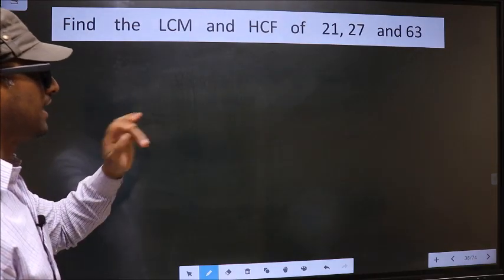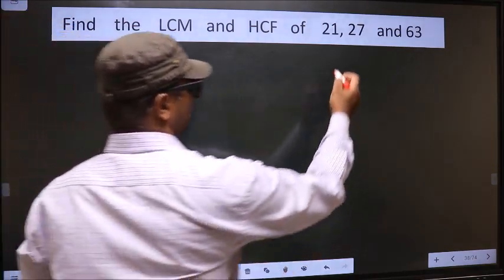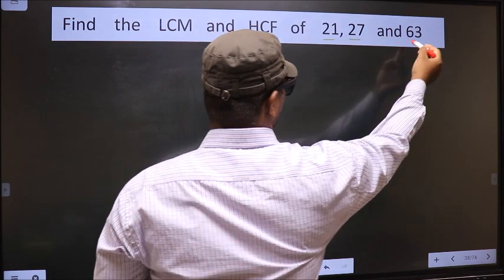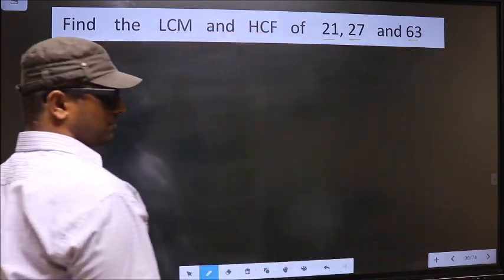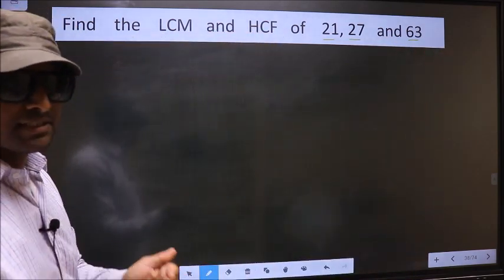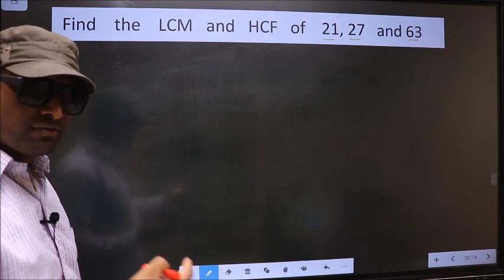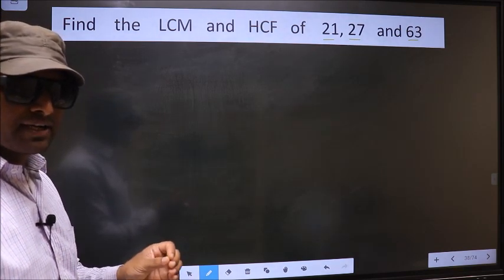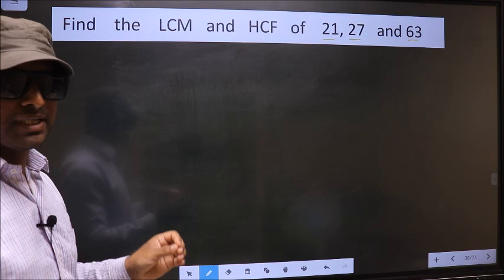Find the LCM and HCF of 21, 27 and 63. To find the HCF and LCM, first we should do the prime factorization of each number separately.